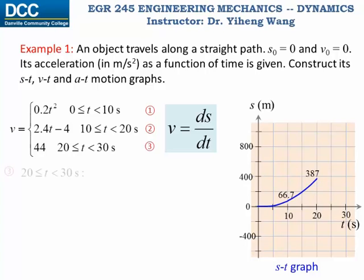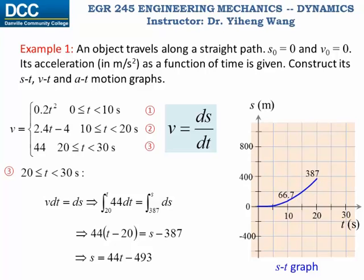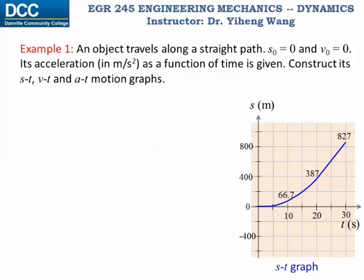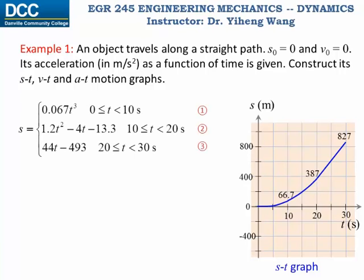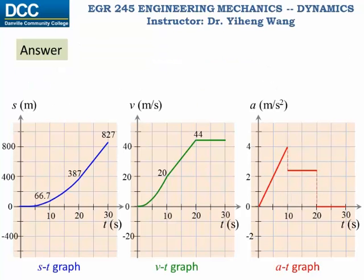For the third period, we perform the same integration, being careful with integration limits, get the last part of the s-t function, and sketch it. At the end of 30 seconds, the position has become 867 meters, and that completes the s-t graph. The position as a function of time as a piecewise function is organized here. Here are the three motion graphs — s-t, v-t, and a-t — that we were asked to construct. Study these graphs and observe how they represent an original function and its first and second derivative functions.